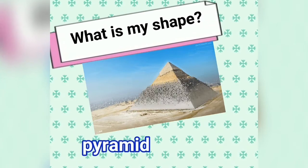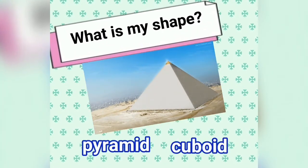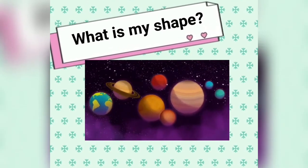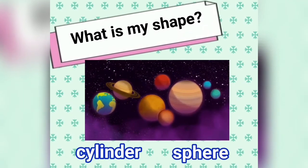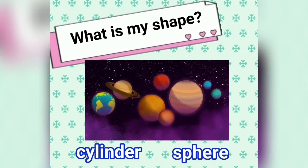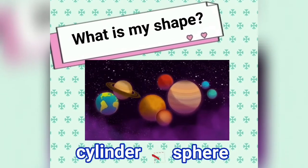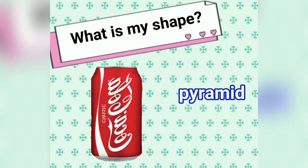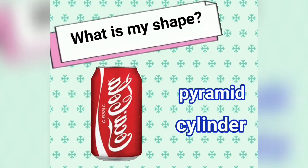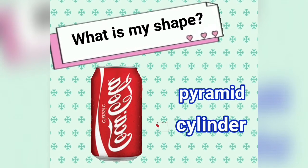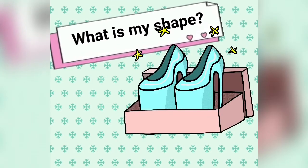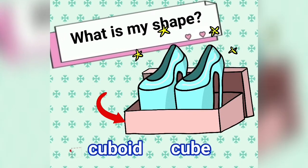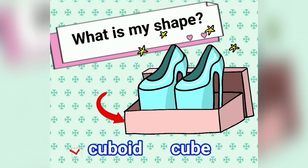What is my shape — pyramid or cuboid? I am a pyramid. What is my shape — cylinder or sphere? You're right, I am a sphere. What is my shape — pyramid or cylinder? I am a cylinder. That's great. What is my shape — cuboid or cube? Very good, I am a cuboid.